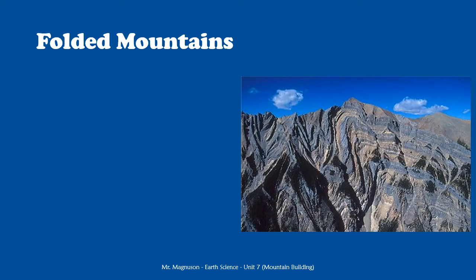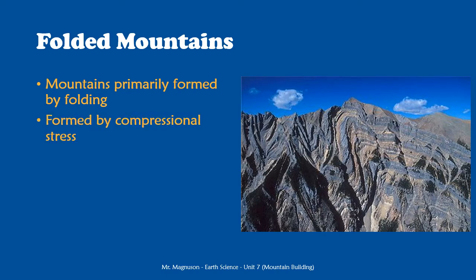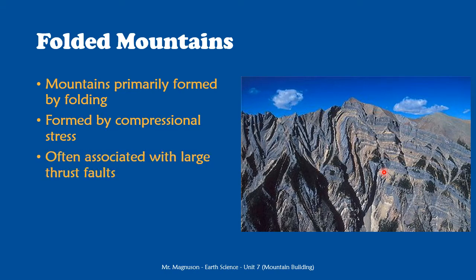The first type of mountain range we're going to look at is folded mountains — mountains primarily formed by folding. These are formed by compressional stress. You can see all these very wavy rock layers where there has been a lot of force compressing rock from both sides, causing it to fold upward. With lots of compression from the sides, we can start to cause breaks and thrust faults. In thrust faults, one bit of rock is forced basically on top of another — they're really low-angle fault lines.